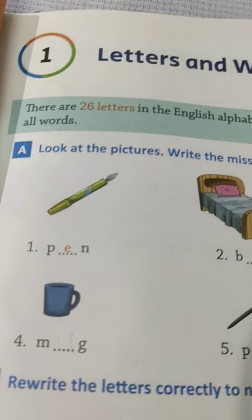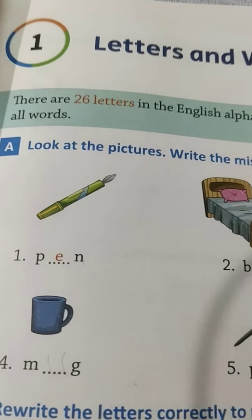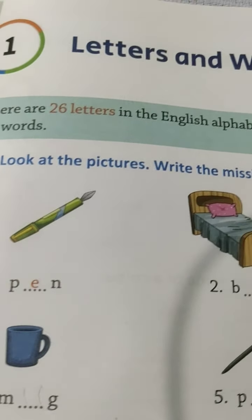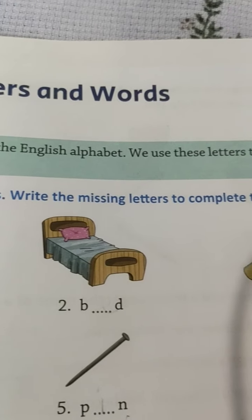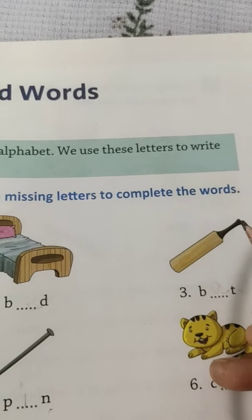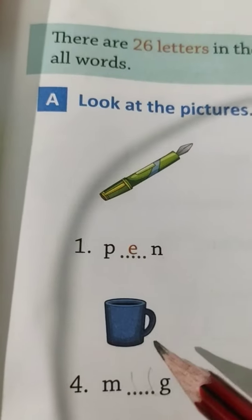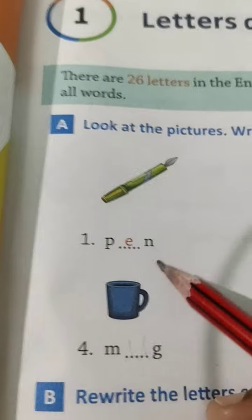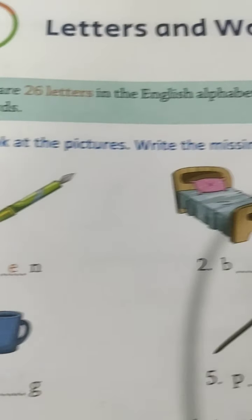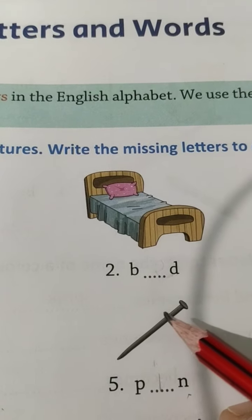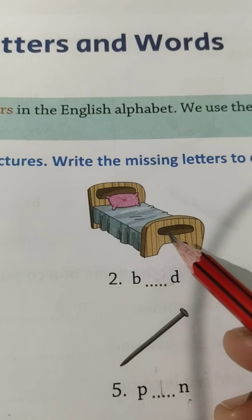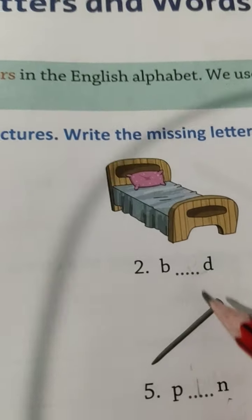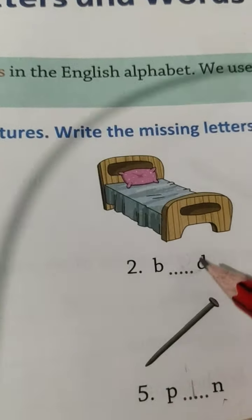Now we will do Exercise 1. Look at the pictures, write the missing letters to complete the words. The first one is done for you. Second one we will do. See the picture. What is it? Yes, it is a bed. B-E-D. Bed.